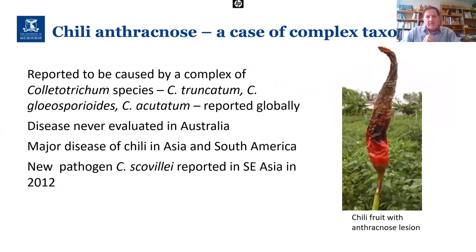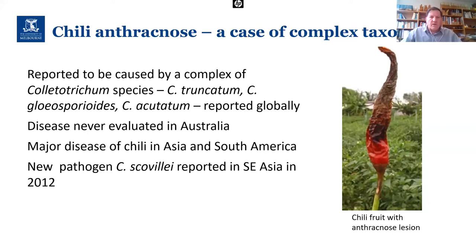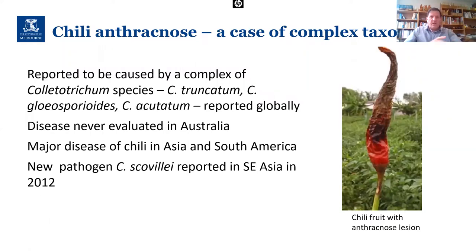Chile anthracnose is close to me — I've been working on this for a long time. This is a real case of complex taxonomy, and by highlighting this story it'll show the issues facing our quarantine officers and biosecurity staff who have to make decisions on risk management. This has always been reported to be caused by a complex of Colletotrichum species. The disease has never been properly evaluated in Australia, or that well evaluated in Southeast Asia. It is a major disease of chili in Asia and South America. In 2012, a new pathogen, Colletotrichum scovillei, was reported — basically a renaming based on taxonomic work.